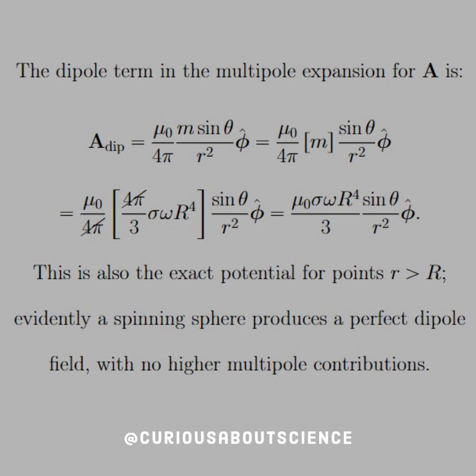Now, what we can do is compare. So, the dipole term in the multipole expansion for A is given as a dipole mu naught over four pi m sine theta over r squared phi hat. Okay? So, we just modify that to put m in the middle, so that when we substitute in m that we just found, we see that the four pi's cancel, and we are left with mu naught sigma omega r to the fourth over three sine theta over r squared phi hat.